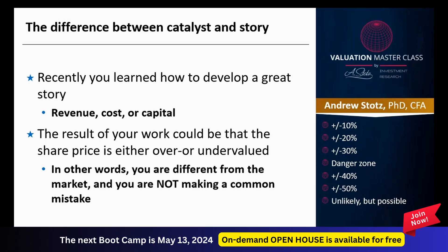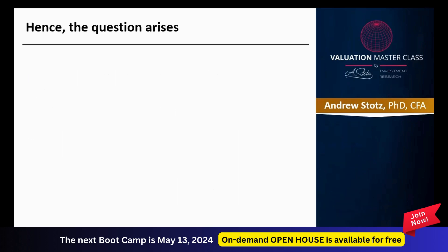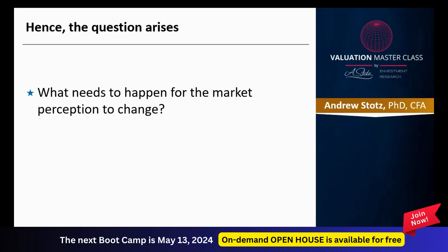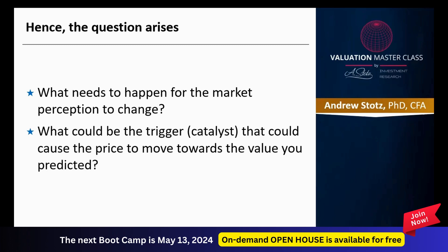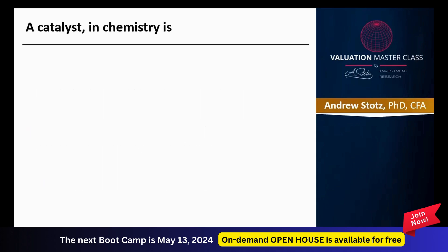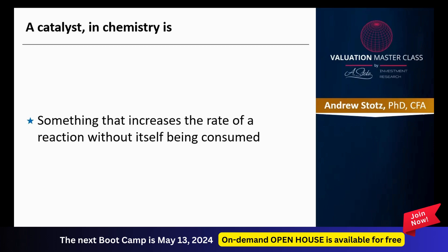It's very unlikely that the market is that different from what you're expecting, and of course it's very rare that you could be right and be 90% different from the market. So when you're doing your final target price, you want to think about a reasonable upside. The question arises: what needs to happen for this market perception to change? What could be the trigger or the catalyst that could cause the price to move towards your predicted value — what we call a re-rating or de-rating. A catalyst is something that increases the rate of a reaction without itself being consumed.